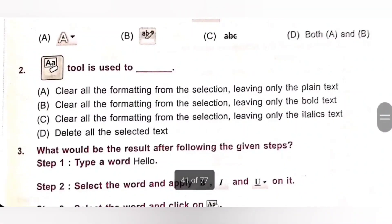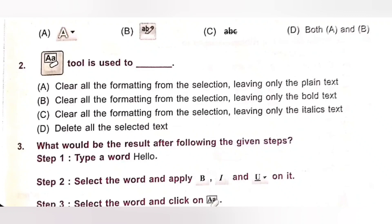Second question: Clear Format Tool is used to — A. Clear all the formatting from the selection, leaving only the plain text. B. Clear all the formatting from the selection, leaving only the bold text. C. Clear all the formatting from the selection, leaving only the italic text. D. Delete all the selected text. The given icon is Clear Formatting, so it will clear all the formatting from the selection, leaving only the plain text. Option A is the correct answer.